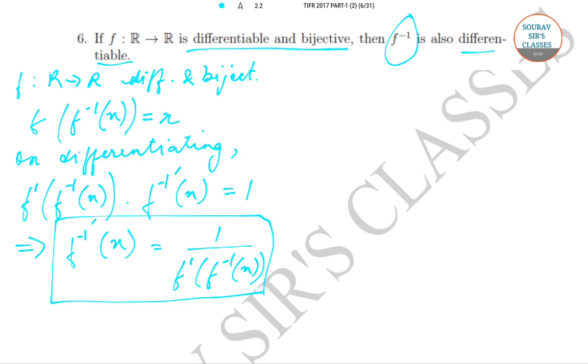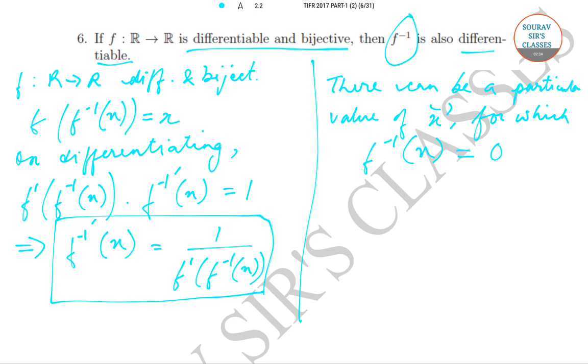Now there can be a particular value of x for which f inverse x is equal to 0. And since f inverse x is equal to 0 and f is differentiable over R, f dash of 0 is also possible and that may be equal to 0 at some point.